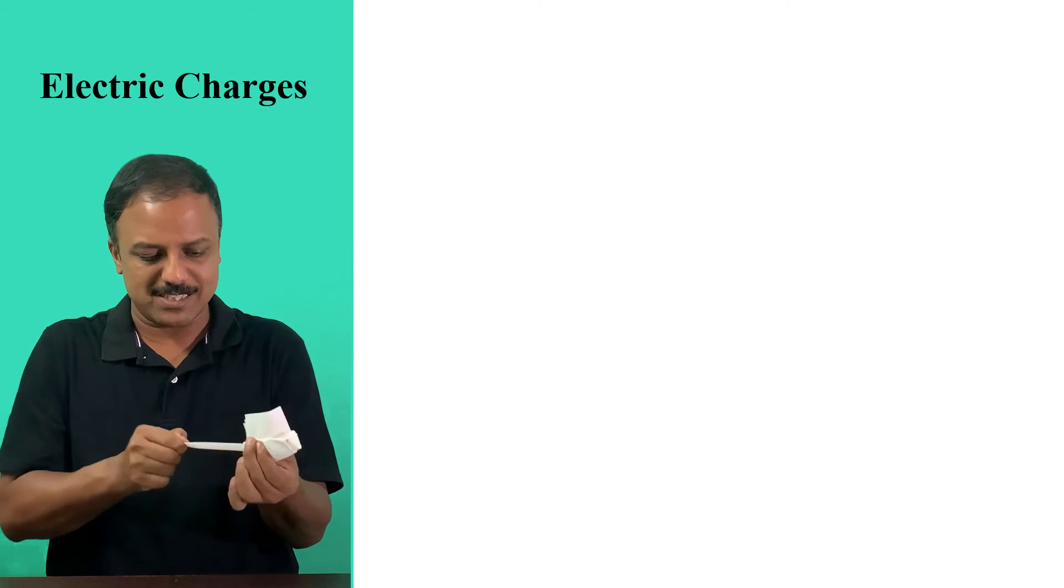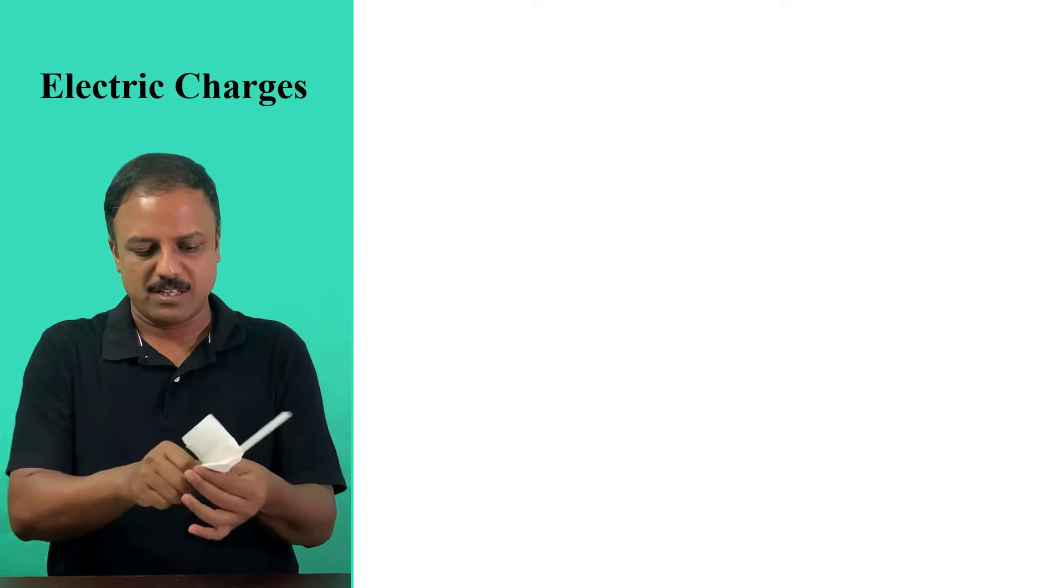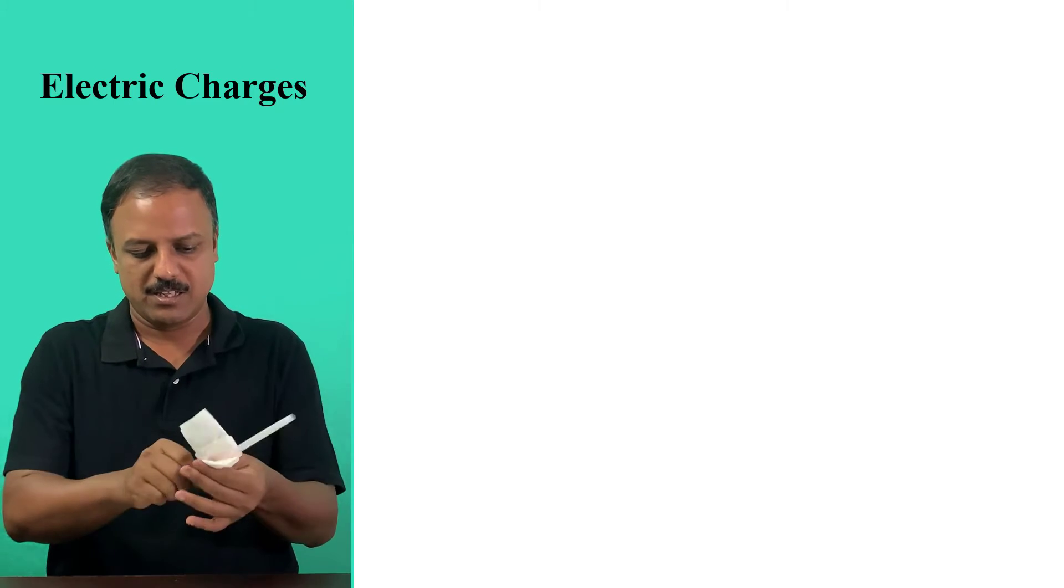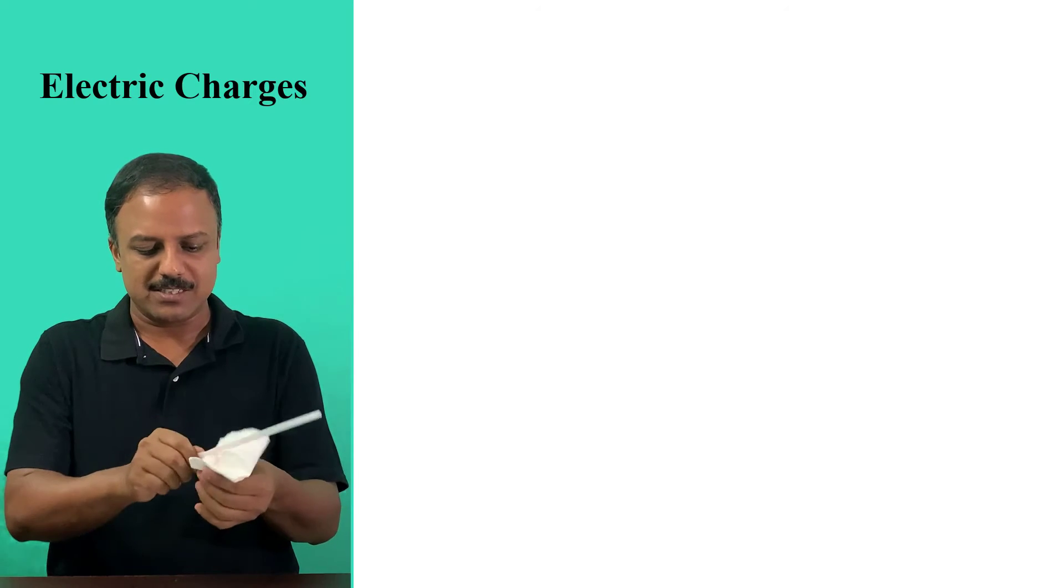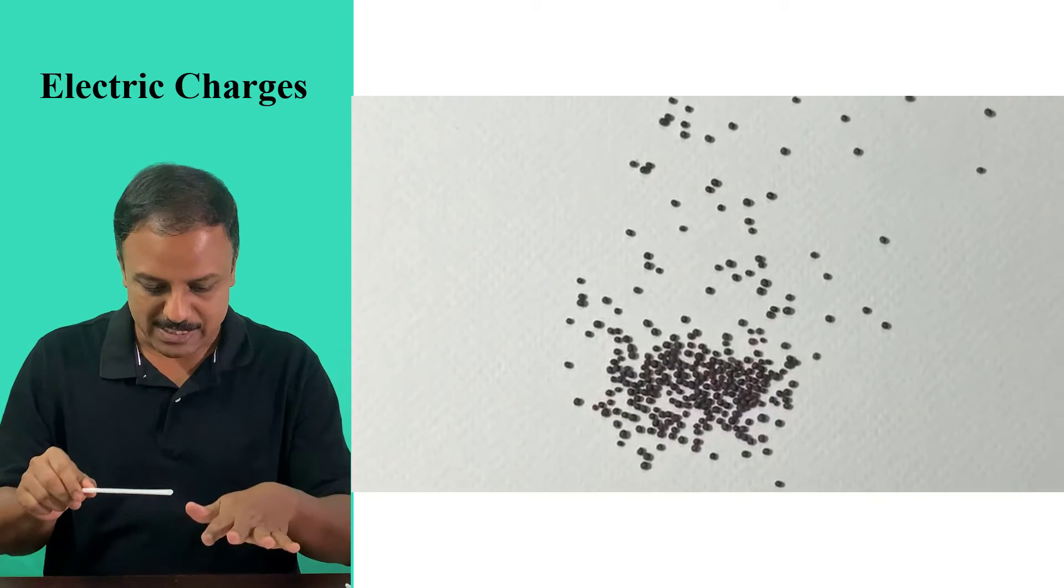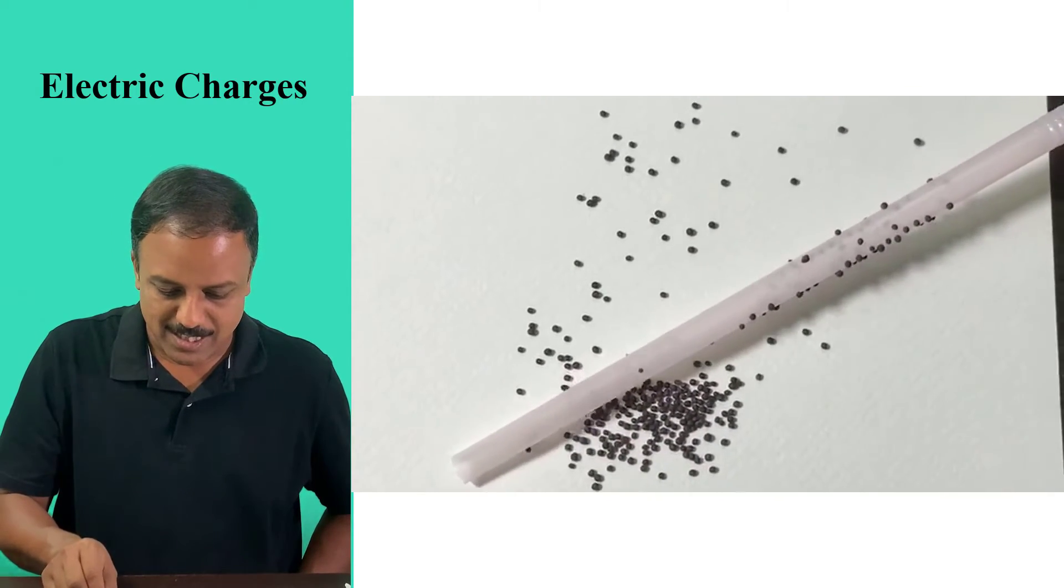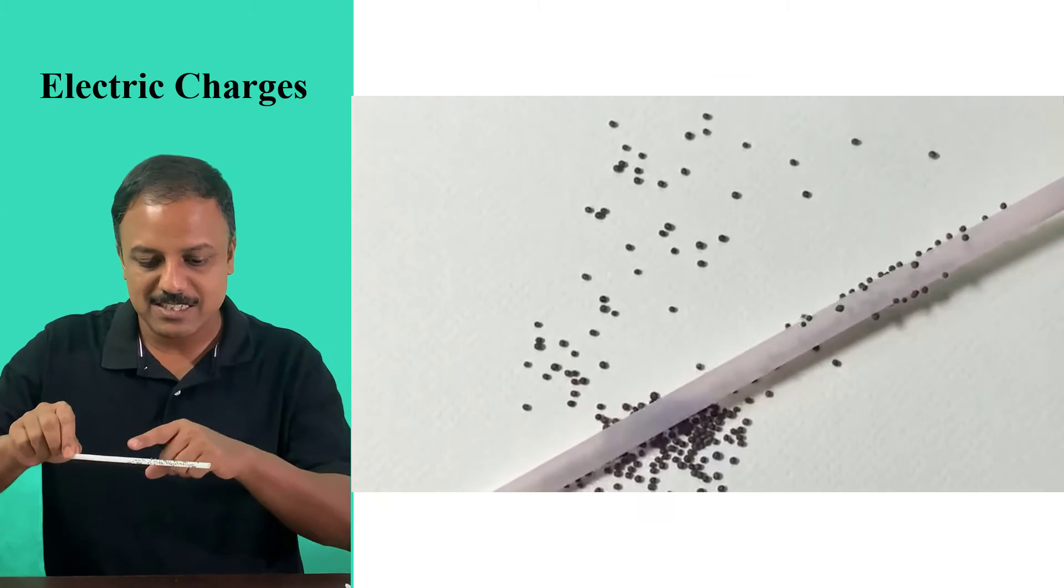All you need to do is just to rub this straw with the paper. So when you rub it like this, you can take the straw close to the seeds and then observe what happens here. Now you can see that these seeds stick to the straw.